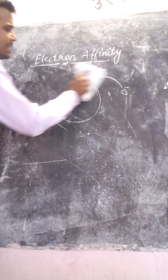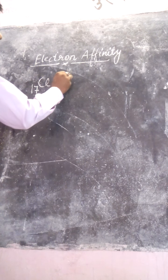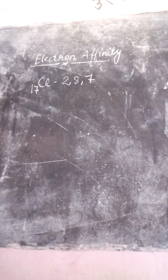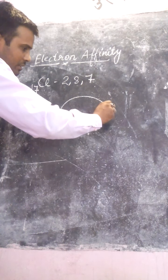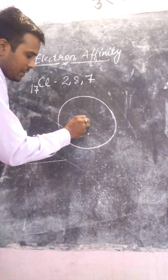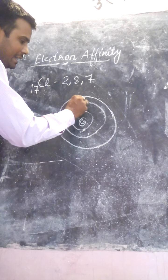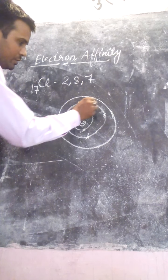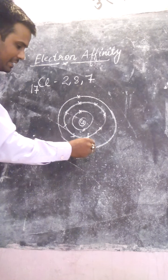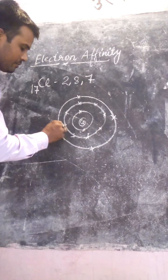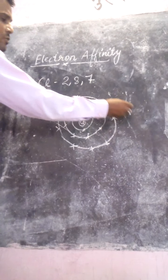Let us consider the example of chlorine. The atomic number of chlorine is 17, and its electronic configuration is 2, 8, 7. To achieve the octet, chlorine requires one electron. The orbit diagram shows K shell, L shell, and M shell — K shell containing 2 electrons, L shell containing 8 electrons, and M shell containing 7 electrons.